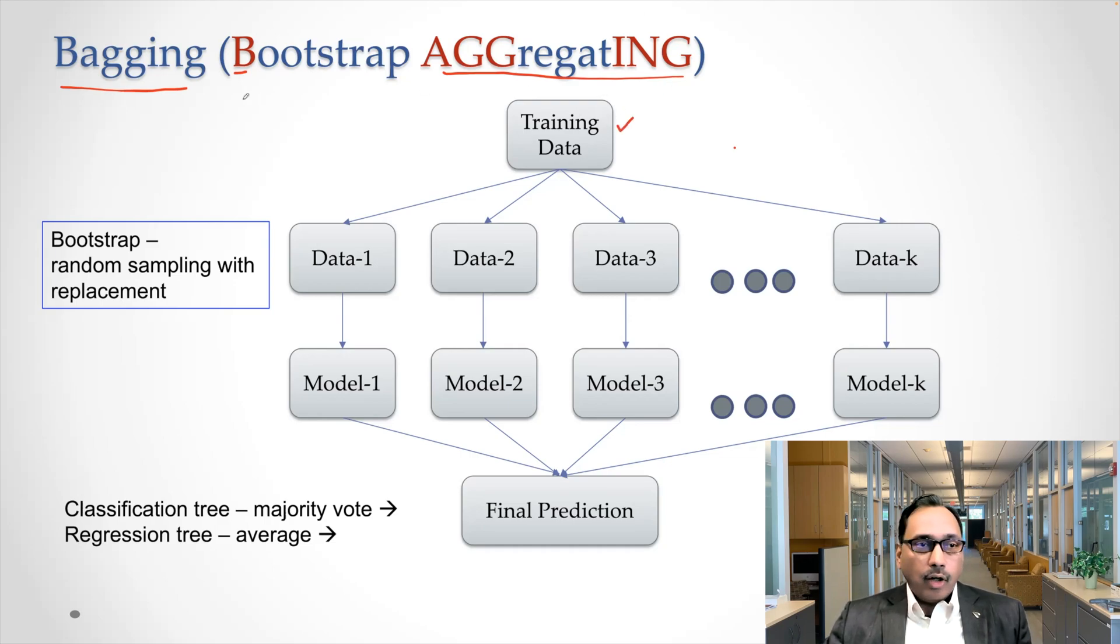The way this algorithm of bagging will proceed, it does bootstrap random sampling with replacement. So you select a data point and put it back. Again, select second one, put it back and so on.